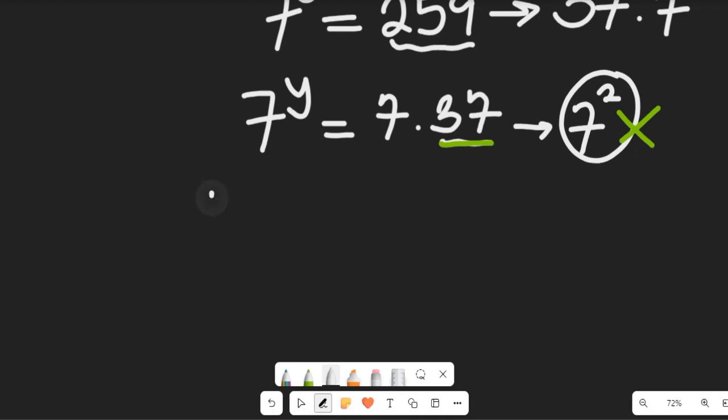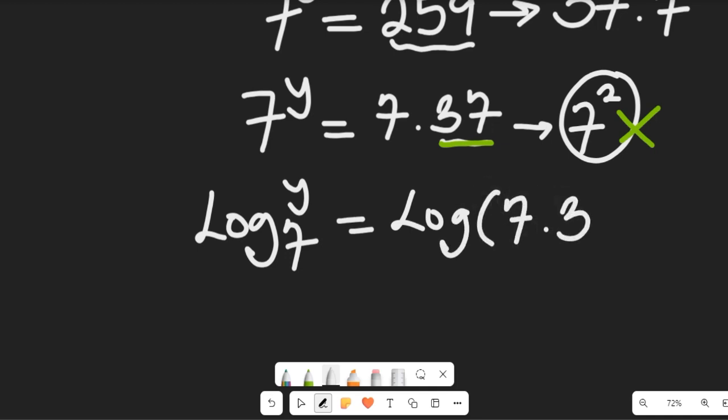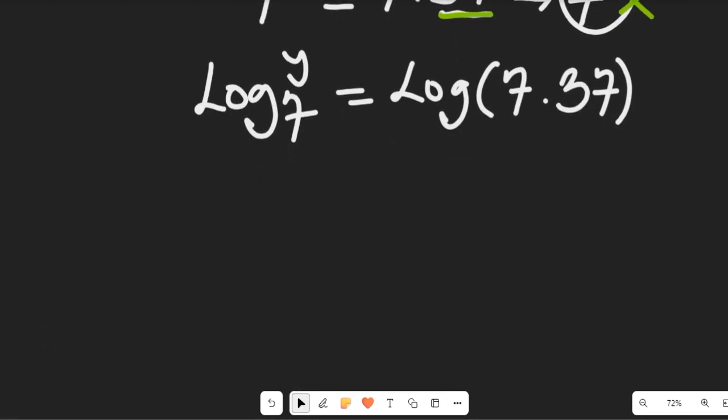Now what we're going to do is take the log of both sides. So we have log of 7 to the power of y equal to log of 7 multiplied by 37. Great.